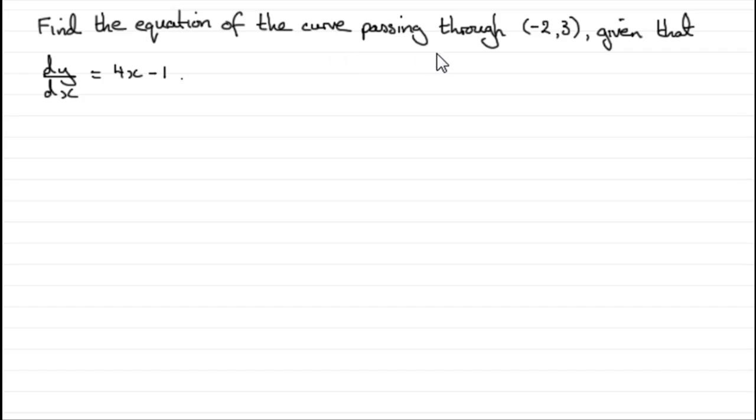Find the equation of the curve passing through the point (-2, 3) given that dy/dx equals 4x minus 1. Remember this is the gradient at any point x on the curve.